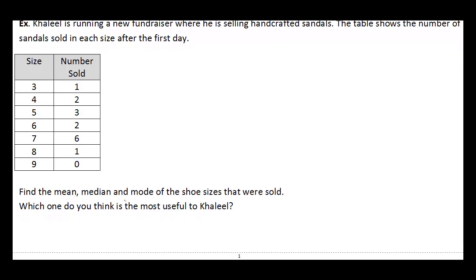We need to find the mean, median, and mode of the shoe sizes that were sold. And then it asks us which one we think is going to be the most useful to Khalil in this case. One thing we might want to do when we have our data set up on a table like this is organize our data in a line like we've been doing so far.